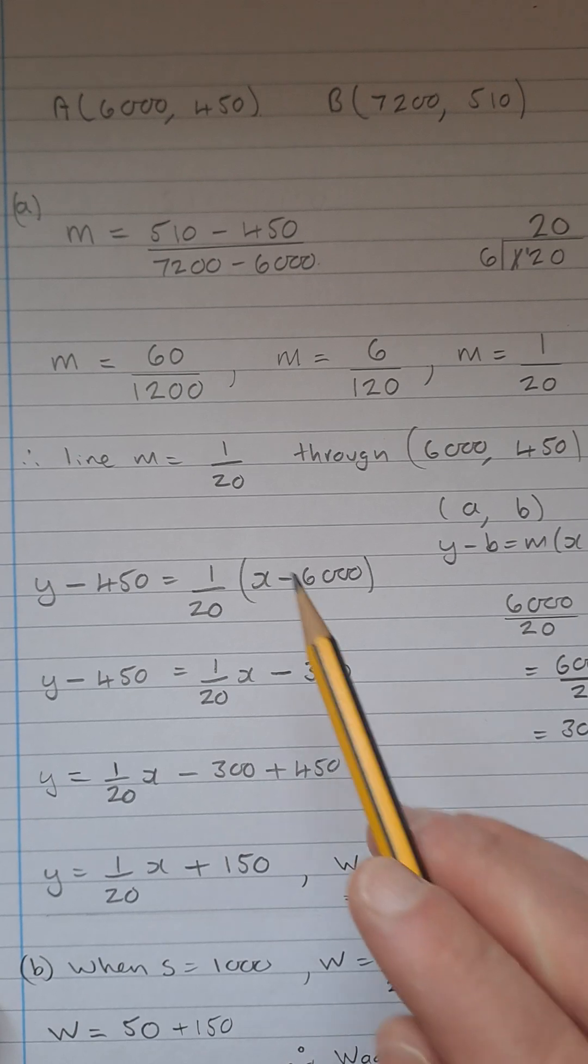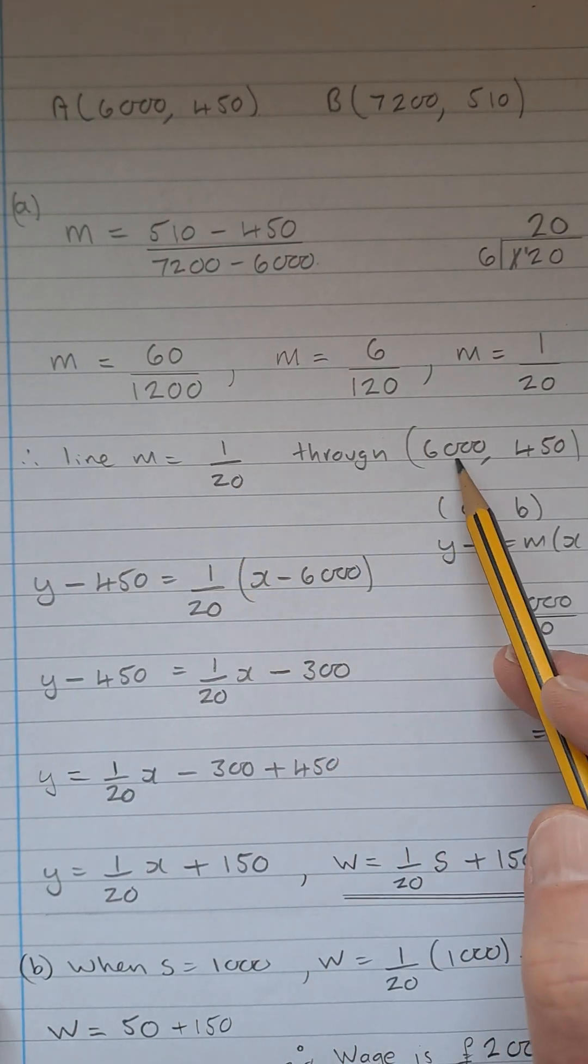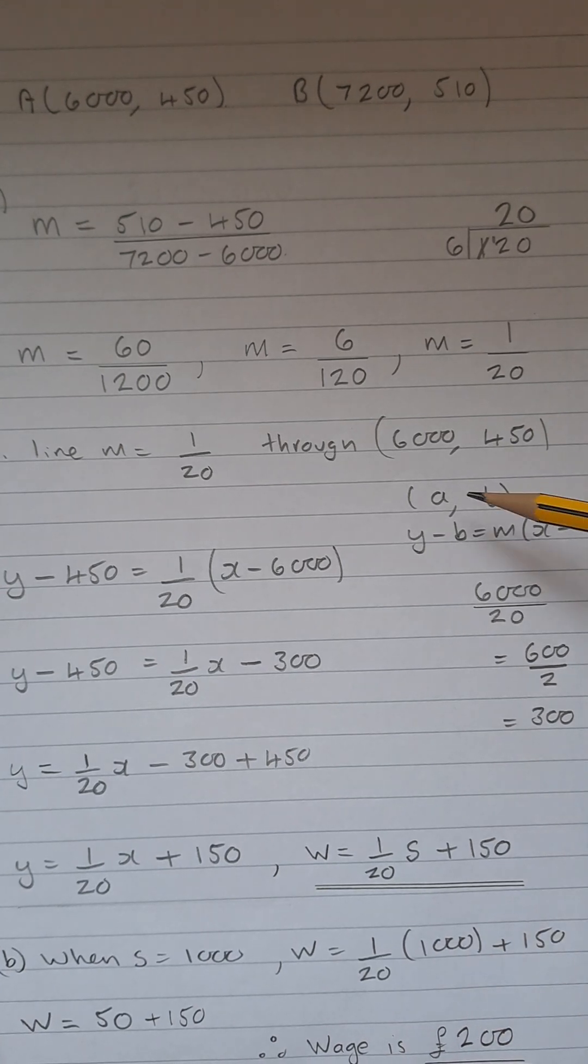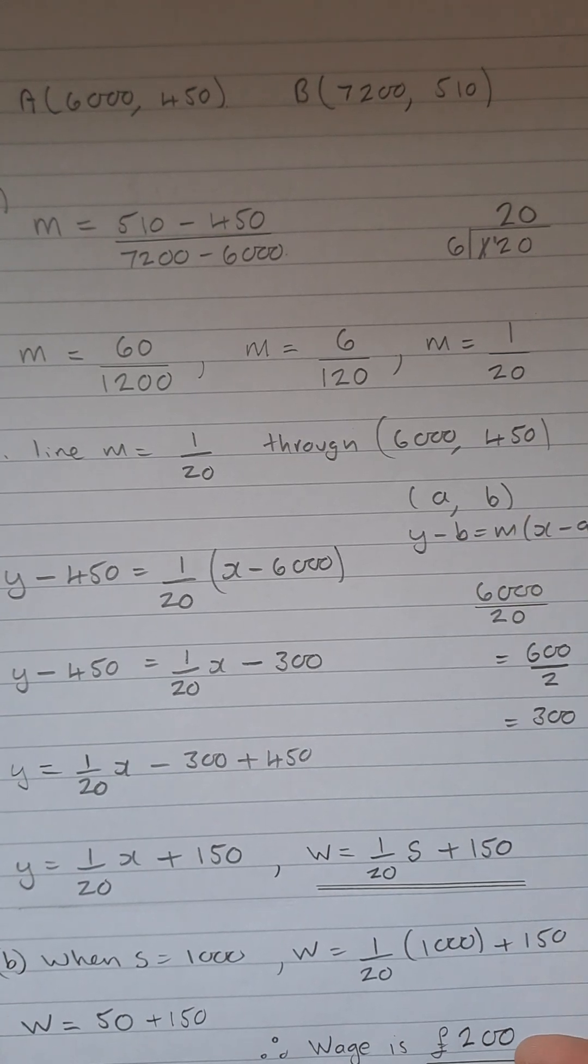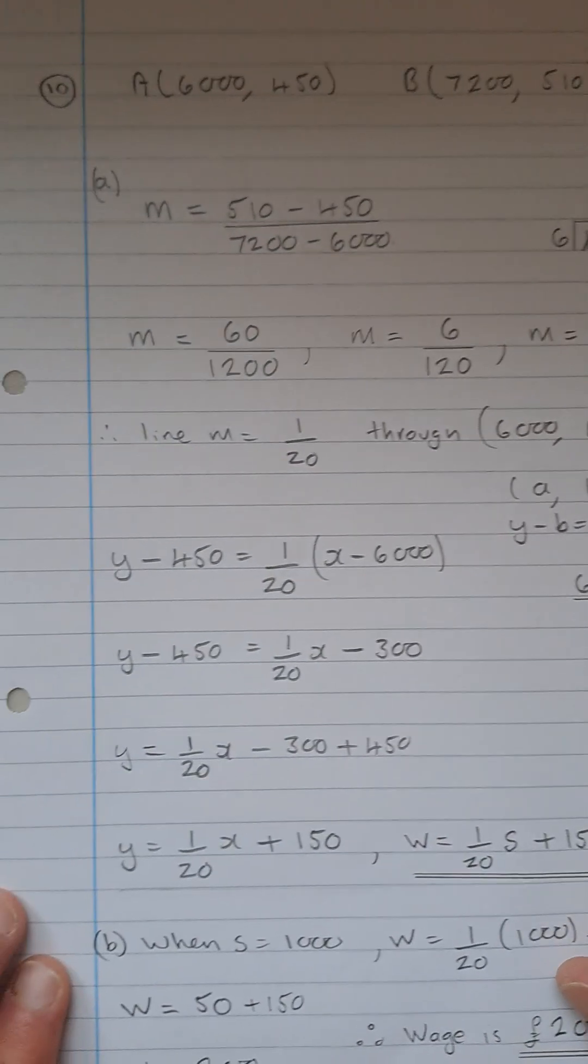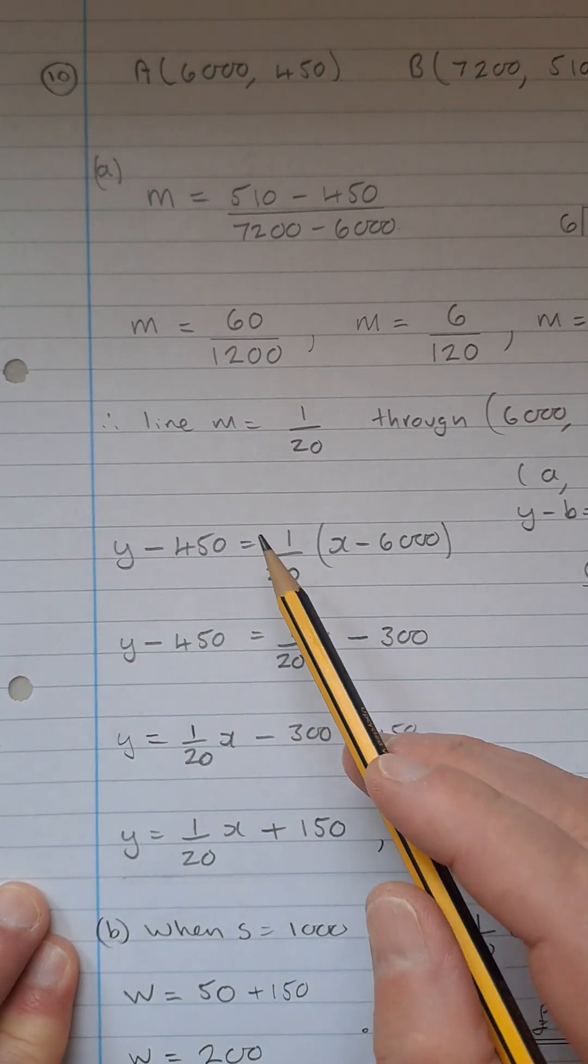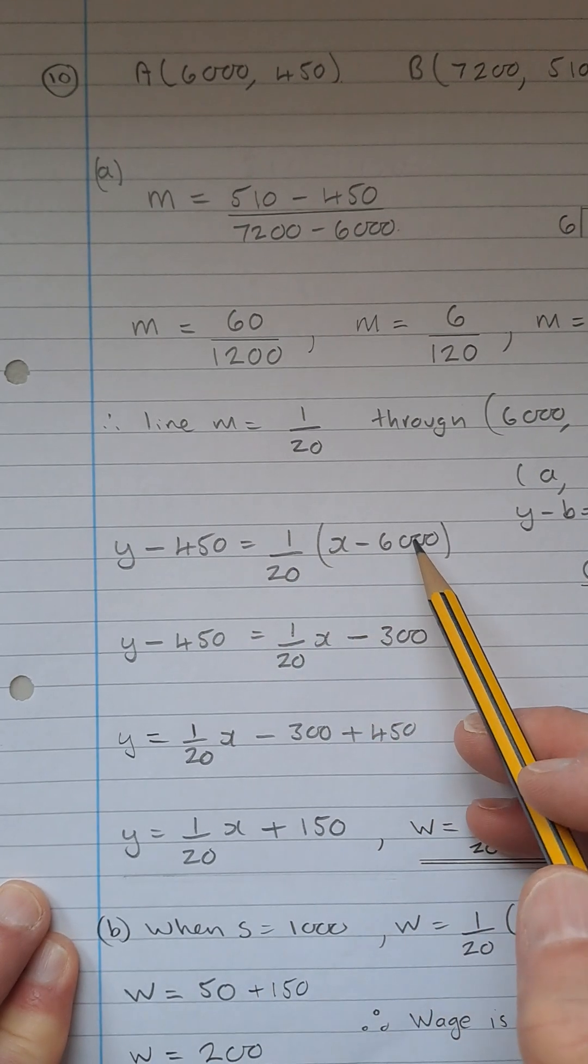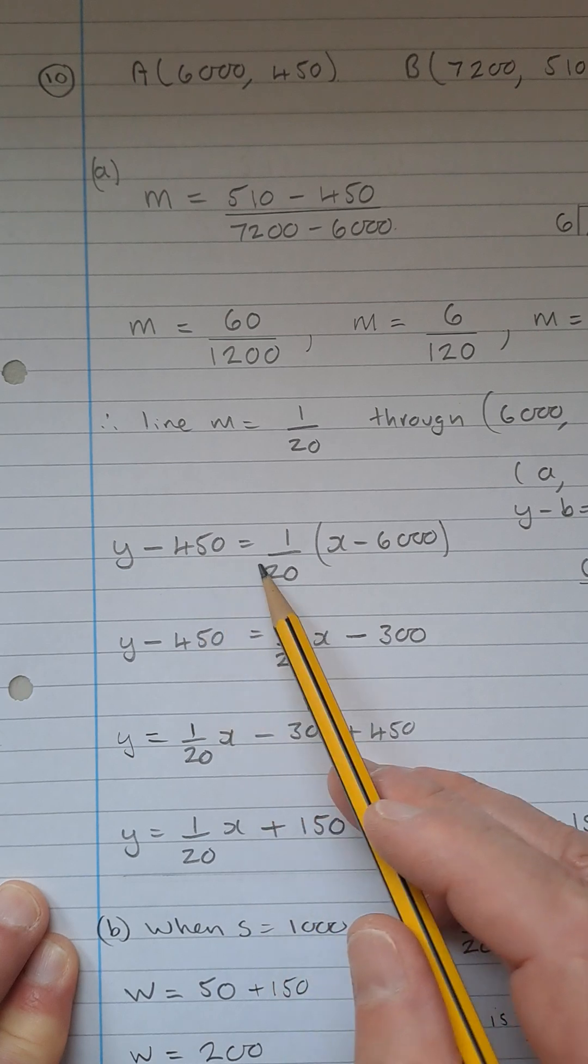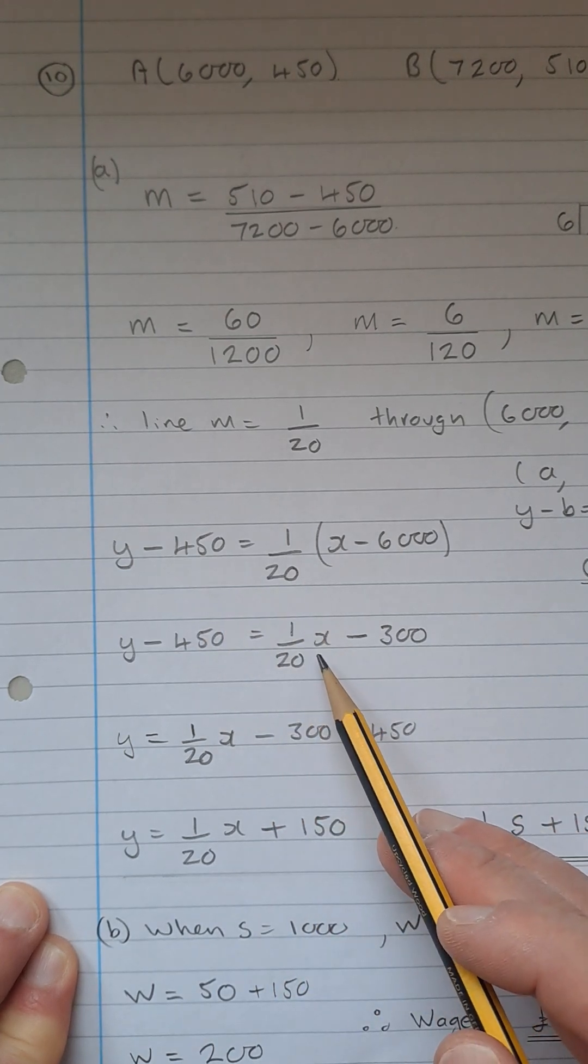So we have a line with a gradient of 1 over 20 going through 6,450. So A is going to be your 6,000. B is going to be your 450. And we are going to use the start of Y minus B is M times X minus A. Just see it there, just make it a bit more visible. So Y minus 450 is 1 over 20 times X minus 6,000. So Y minus 450 is 1 over 20 times X.